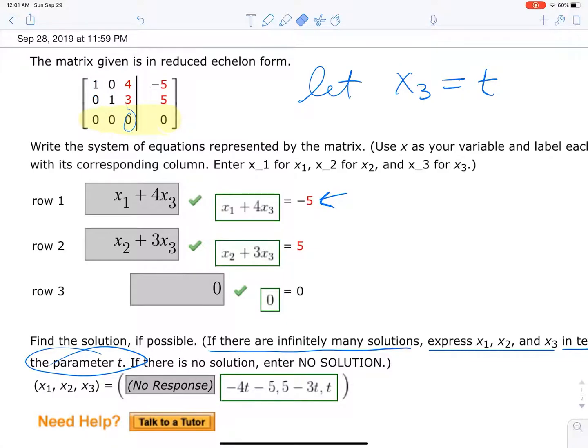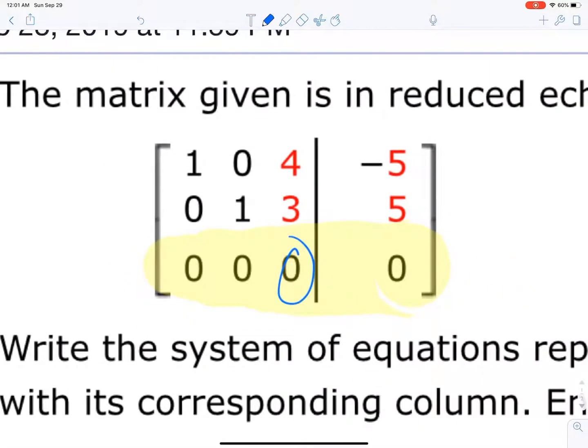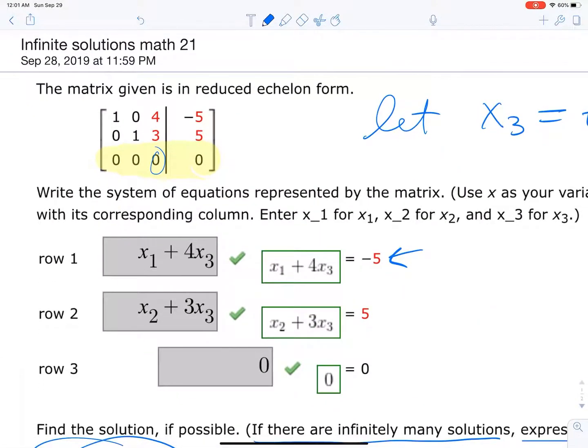Then, row 1 can be written like that: x1 plus 4x3 equals negative 5. See that? The 1 and the 4 are in the x1 and x3 spots, and those become the coefficients. So you get that equation x1 plus 4x3 equals negative 5.